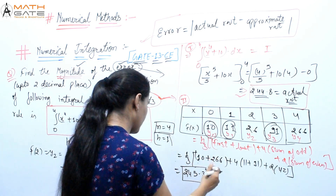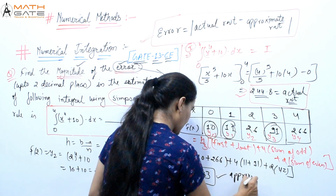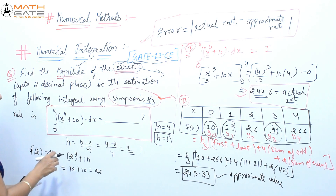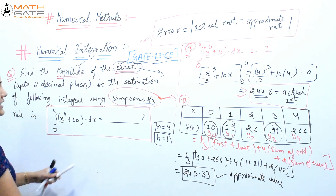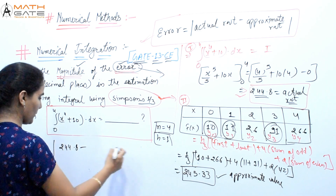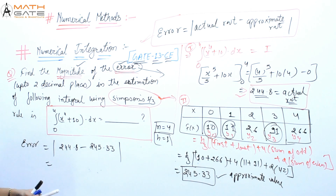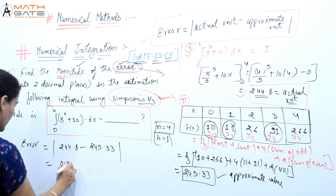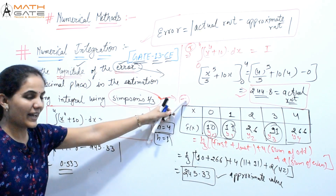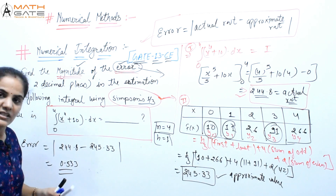So after solving, we get the approximate root = 245.33. We now have both values: the actual root and the approximate root. So the error = actual root − approximate root = 244.8 − 245.33. That gives us the magnitude of the error, which is the answer to this question.